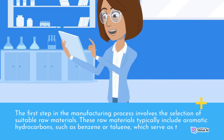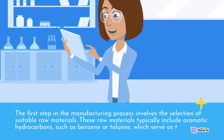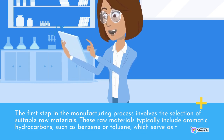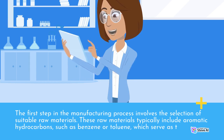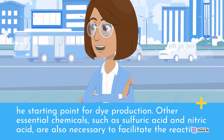The first step in the manufacturing process involves the selection of suitable raw materials. These raw materials typically include aromatic hydrocarbons, such as benzene or toluene, which serve as the starting point for dye production. Other essential chemicals, such as sulfuric acid and nitric acid, are also necessary to facilitate the reaction.